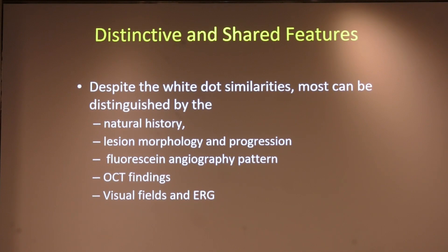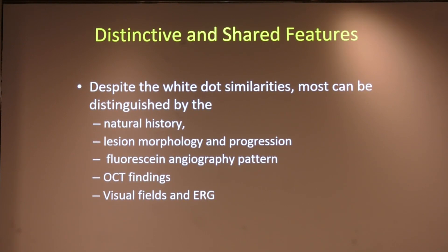Despite white dots appearing similar, most conditions can be distinguished by history, lesion morphology, and progression. Ancillary tests — fluorescein angiography patterns, OCT, and autofluorescence patterns, both in the blue peak and near-infrared autofluorescence — are very helpful. Where facilities are available, visual fields, full-field ERG, or multifocal ERG would also help distinguish these conditions.